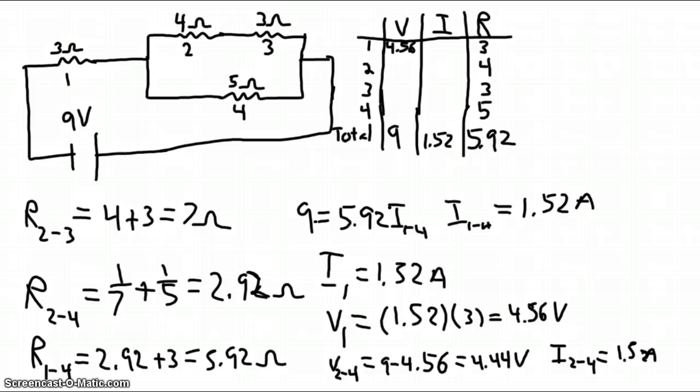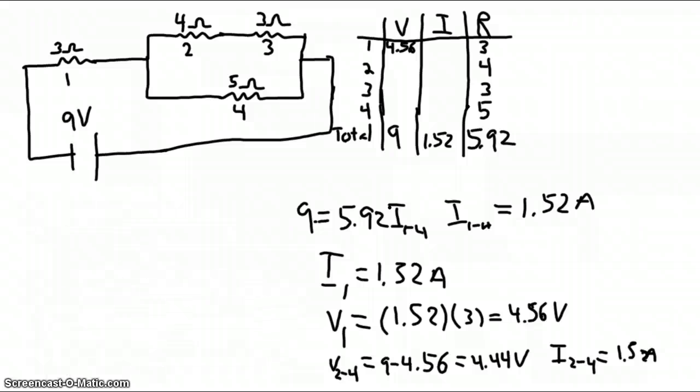Now since I'm out of space I'm going to erase the earlier part of my work. In a parallel circuit the voltage is shared so the voltage for resistor 4 is 4.44 volts.